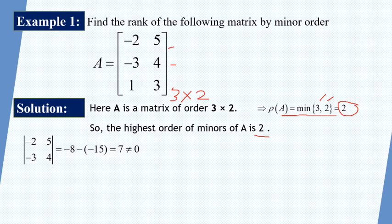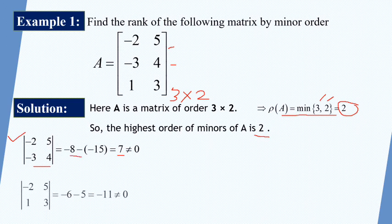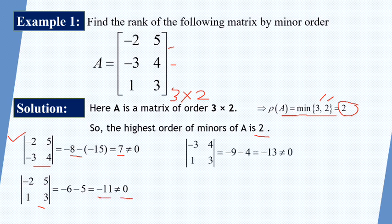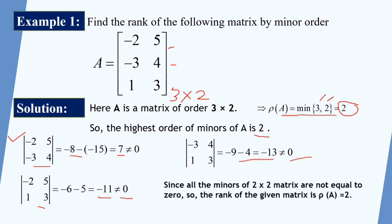We now compute the 2x2 minors. The first minor is [−2, 5; −3, 4], and its determinant is 7, which is not equal to 0. Another minor is [−2, 5; 1, 3], with determinant −11, also not equal to 0. The third minor is [−3, 4; 1, 3], with determinant −13, also not equal to 0. Since all 2 by 2 minors are non-zero, the rank of the given matrix is 2.